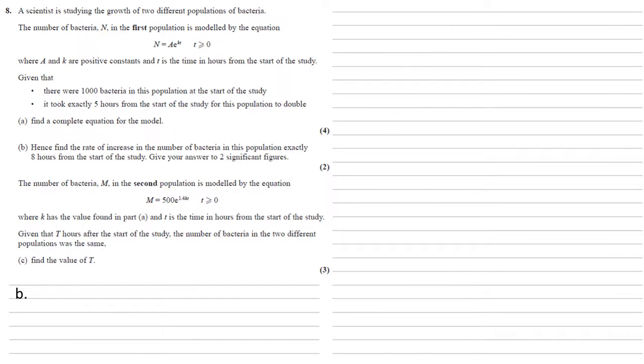Part b: Hence find the rate of increase in the number of bacteria in this population exactly eight hours from the start of the study, giving our answers to two significant figures. One thing to note here is that it says hence, so we're going to use our answer to part a. So n equals 1000 e to the fifth log natural 2 times t.